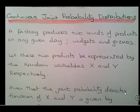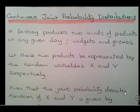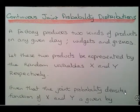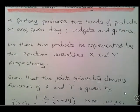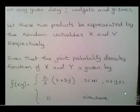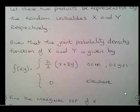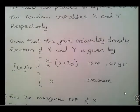In this presentation we're going to look at the continuous joint probability distribution. A very simple example: a factory produces two kinds of products in any given day, widgets and gizmos. Let these two products be represented by the random variables x and y respectively. Here we're given the joint density function, the joint probability density function, or the joint PDF.